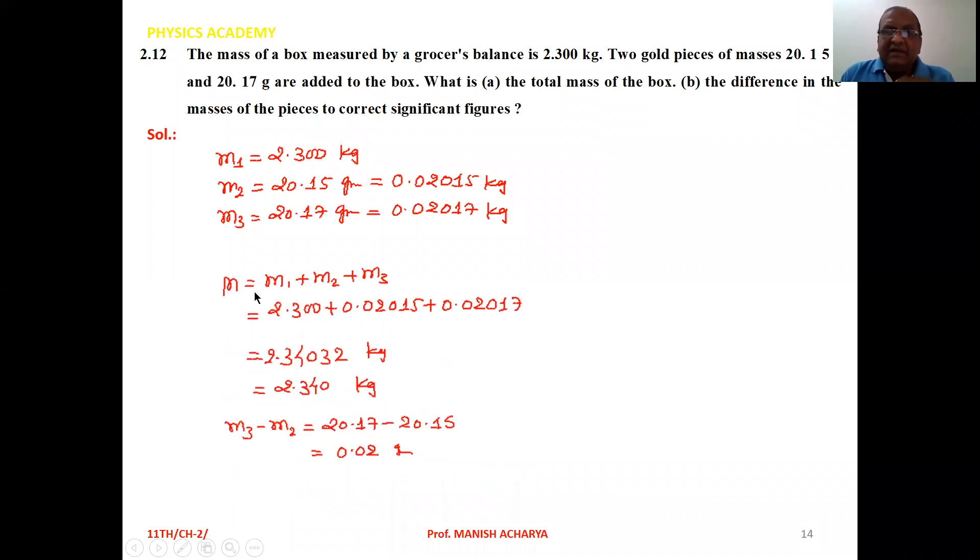summation of all this. Total mass m = m1 + m2 + m3, so 2.300 + 0.02015 + 0.02017. Now see, in each measurement given, the total number of significant digits is 4. This implies that your final answer must be restricted to 4 significant digits.